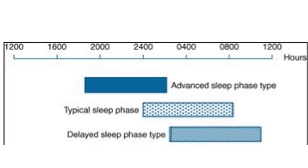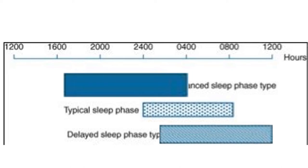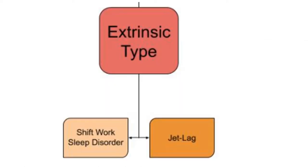In advanced sleep phase type, our internal clock is set earlier — we go to bed earlier and wake up early in the morning. In delayed sleep phase type, we have a delayed onset of sleep and we awake late. Now we will discuss the two extrinsic types: shift work sleep disorder and jet lag.